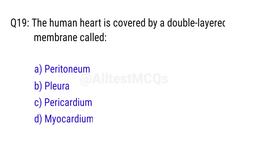Q19. The human heart is covered by a double-layered membrane called? Right answer is option C, pericardium.